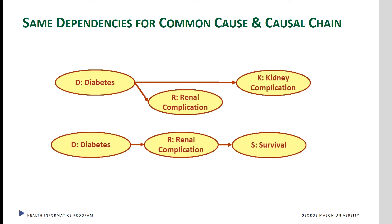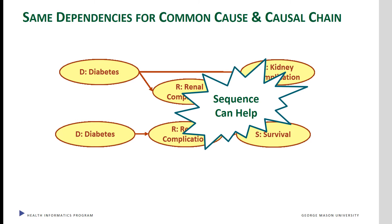Tests of independence cannot always determine the structure of the network, as common cause and causal chains may have the same independence structures. The sequence of events can help sort out whether we are dealing with a common cause or a causal chain.